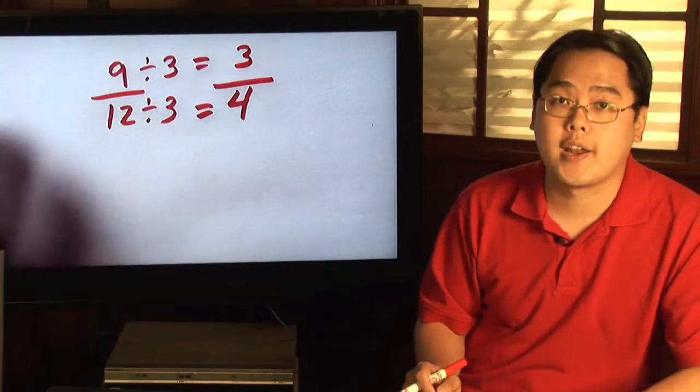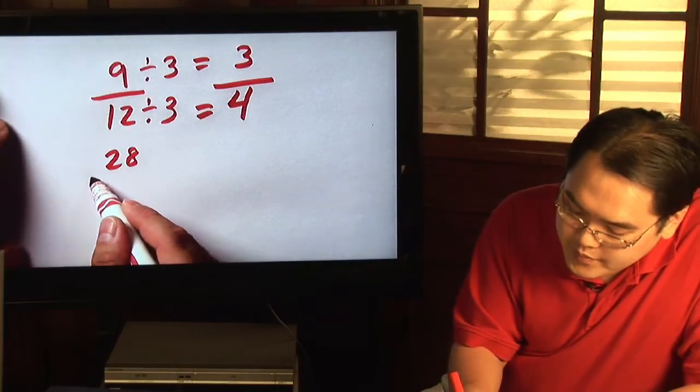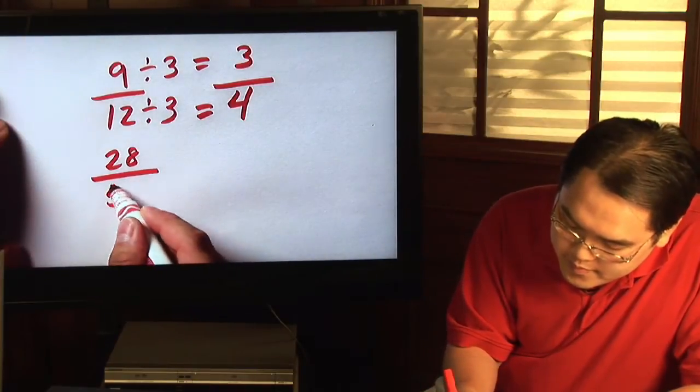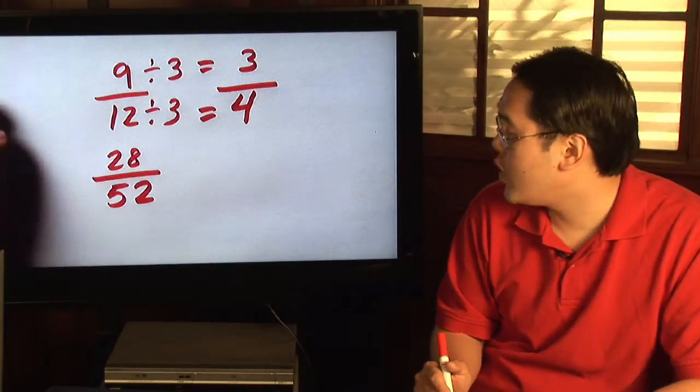Now here's another strategy. Suppose you want to reduce 28 over 52. It's a pretty large fraction, more so than 9 twelfths.